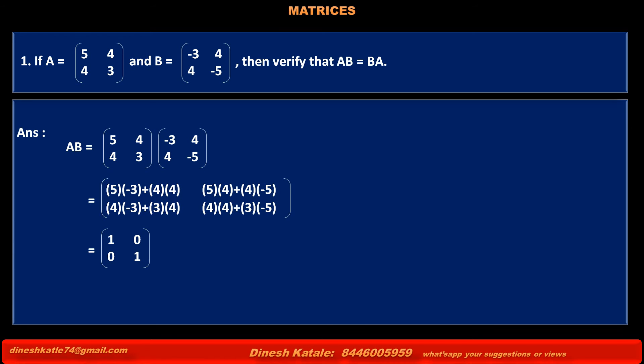Solving the above, we get [[1, 0], [0, 1]]. Product of matrices BA is equal to matrix B [[-3, 4], [4, -5]] into matrix A [[5, 4], [4, 3]].